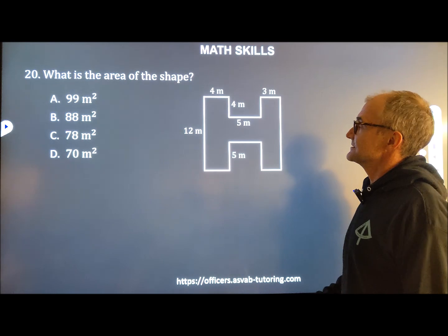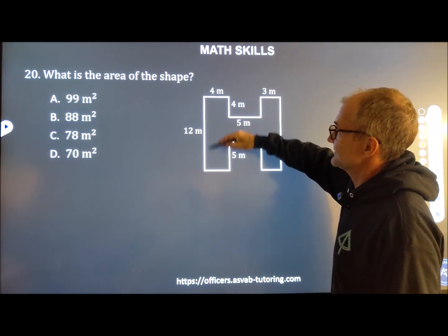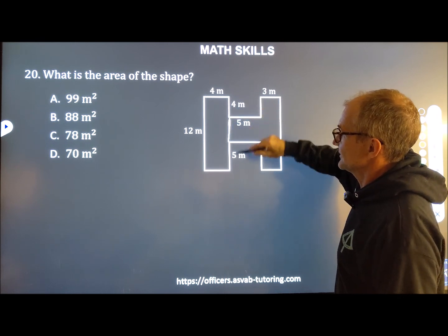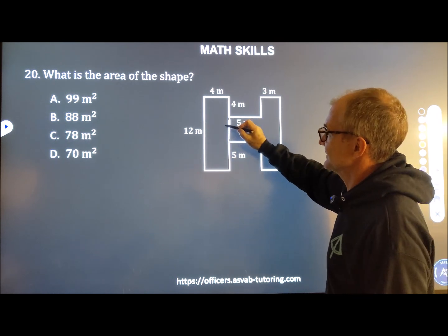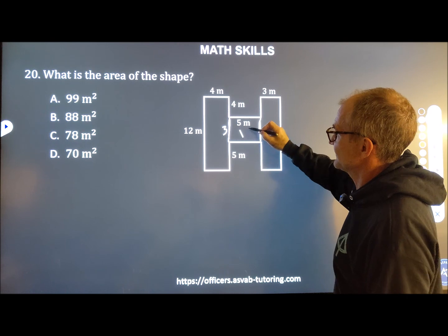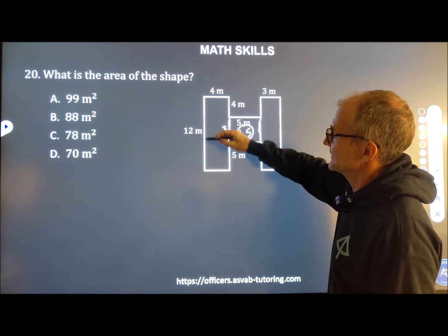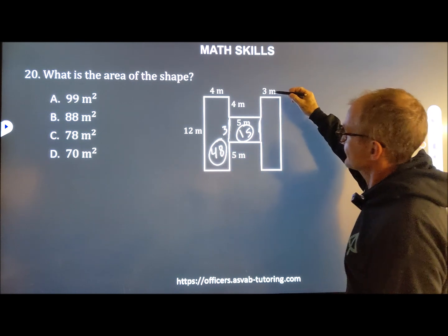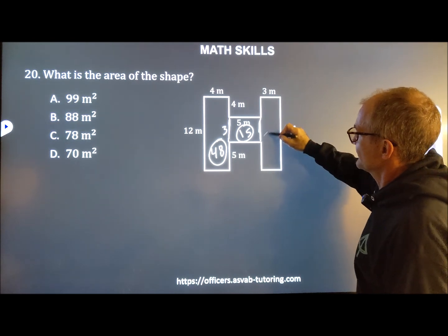Number 20. What's the area of the shape? Well, I got to figure out the other lengths given what we have. That's 12, 4. This right here, 4 and 5 is 9. 9 from 12 is 3. So this rectangle here is 3 by 5, which is 15. This rectangle right here is 4 by 12, 48. And then this rectangle right here is 3 by that same 12 or 36.